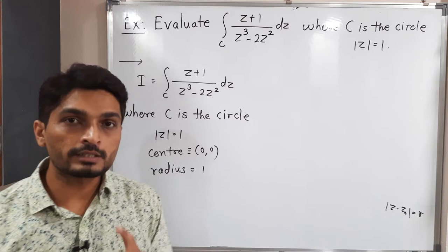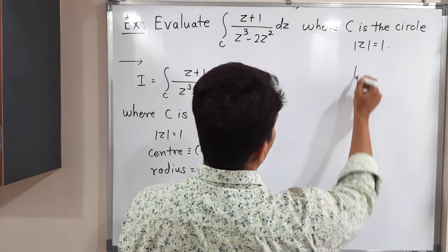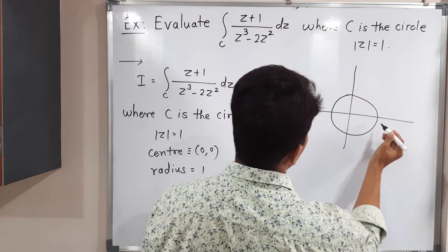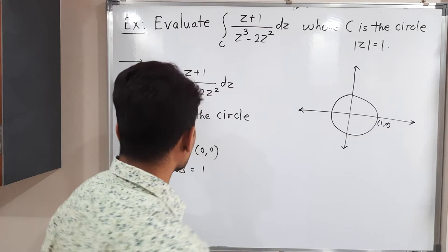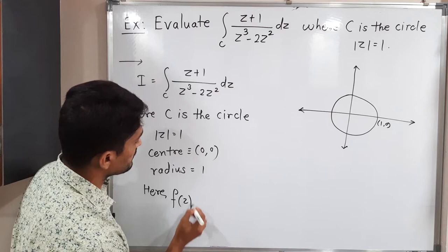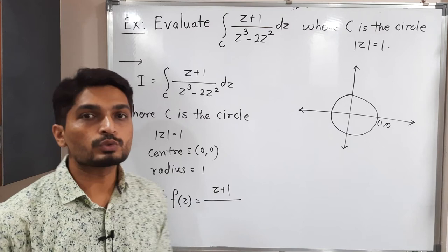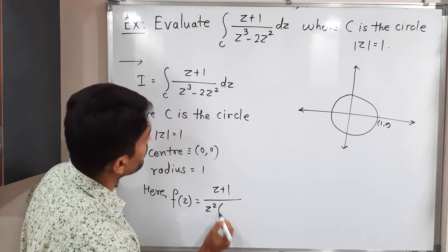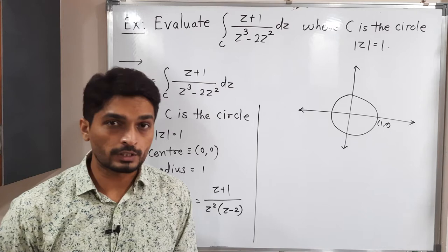Let us draw the circle with center (0, 0) and radius 1. Now, let us write the given function F(z). F(z) equals (Z + 1) / (Z³ − 2Z²). We can take Z² common from the denominator, giving Z²(Z − 2). So the function has two singularities: Z = 0 and Z = 2, since putting these values makes the denominator zero.